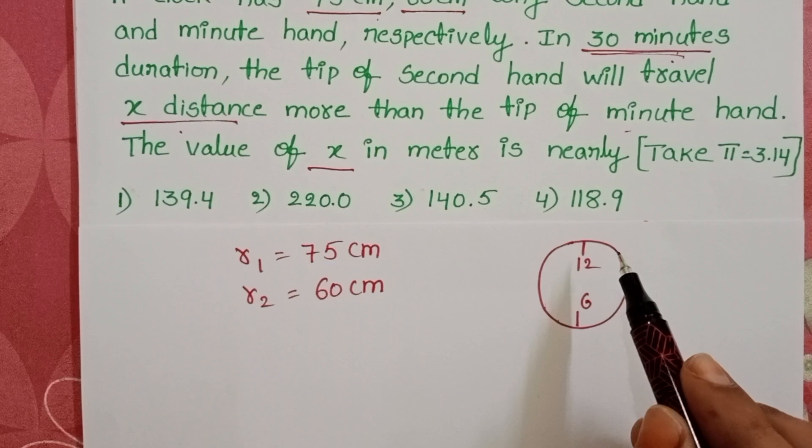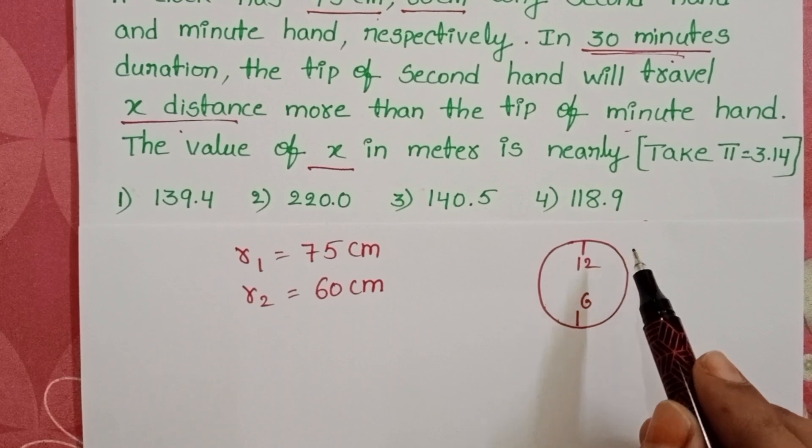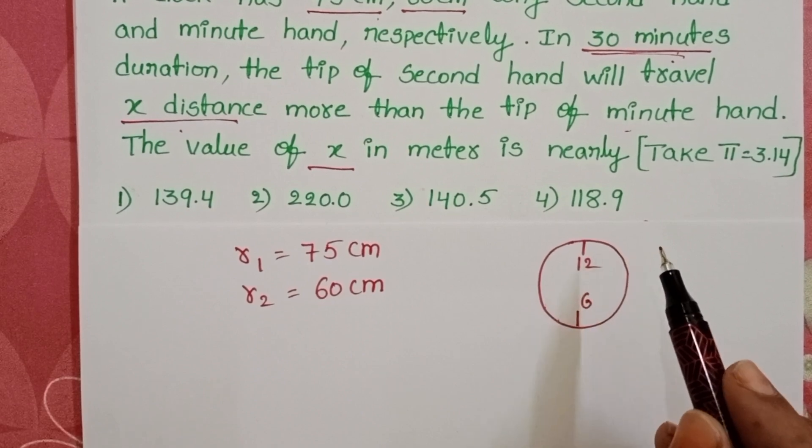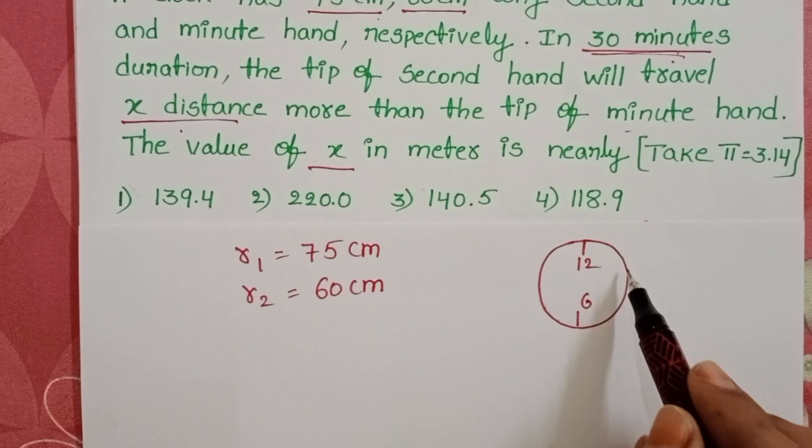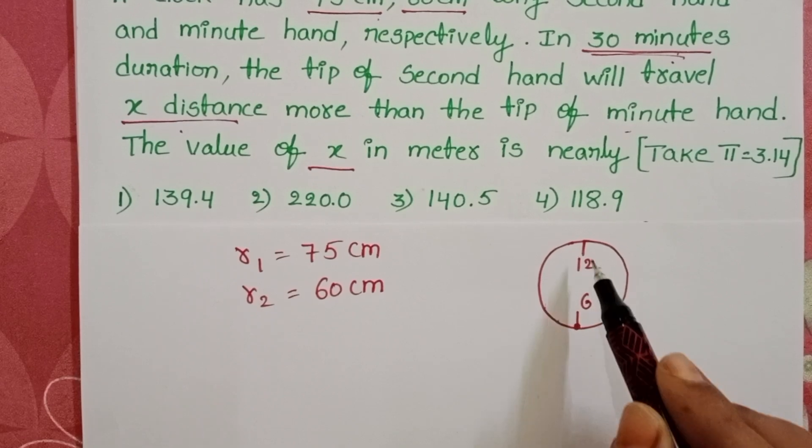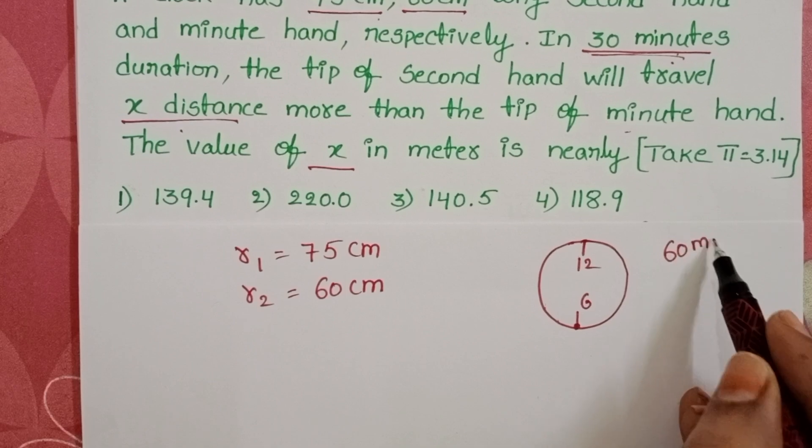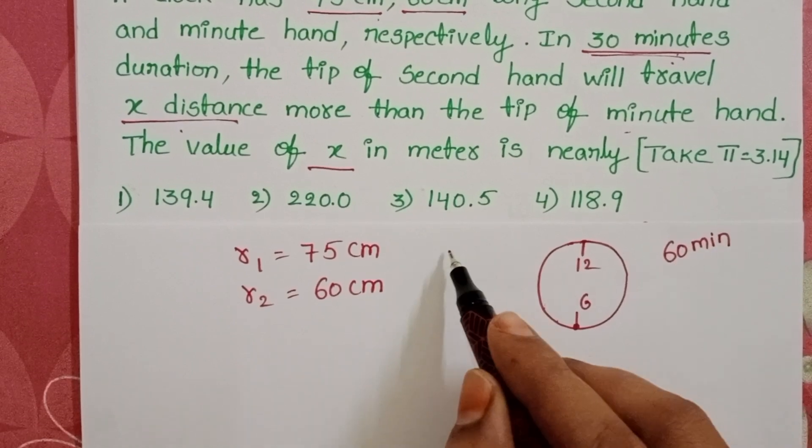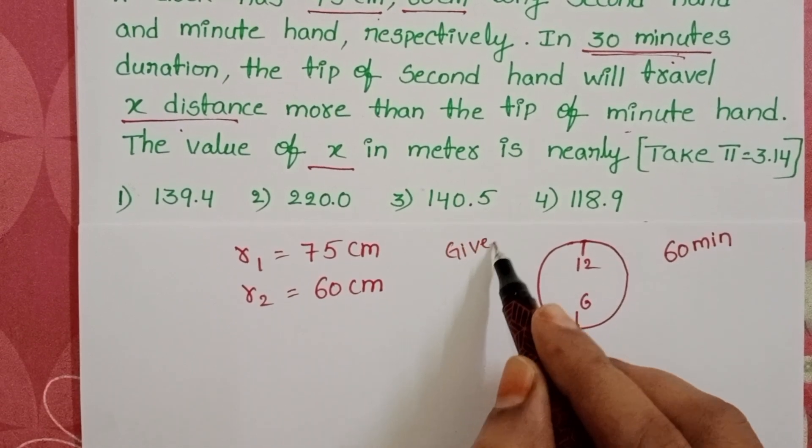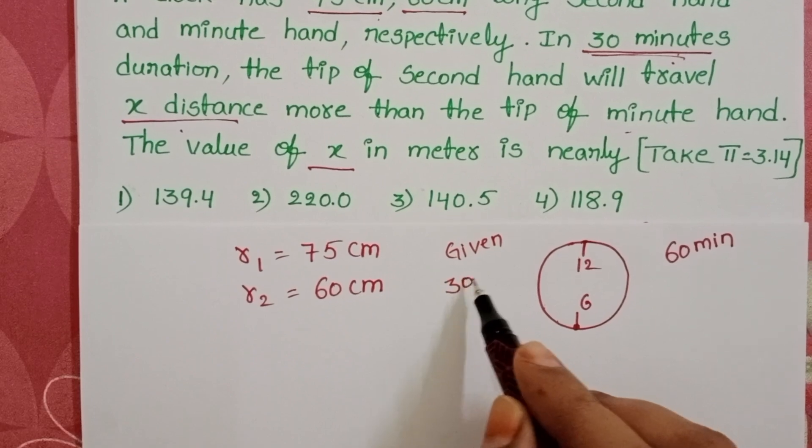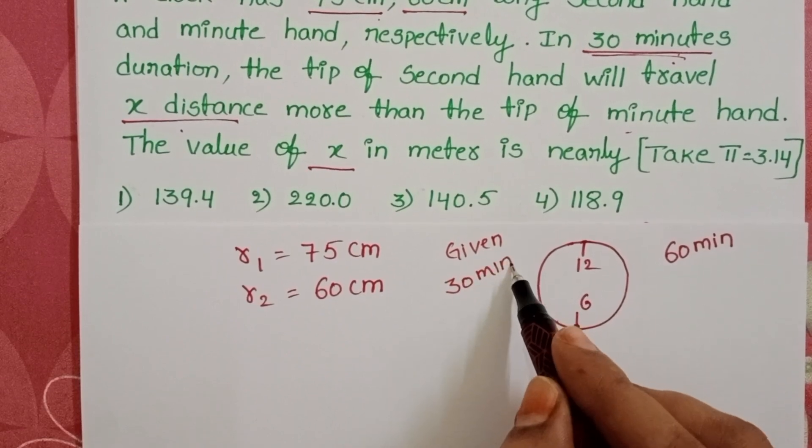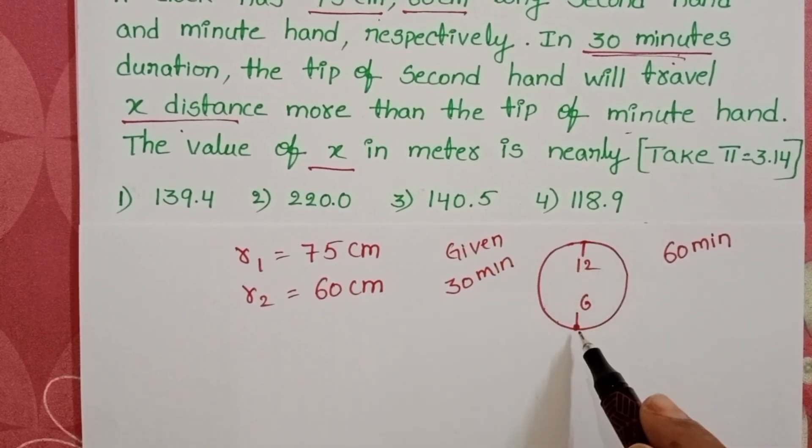We know within the 30 minutes time, the distance travelled by the minute hand is only half of the revolution. For one revolution, it takes 60 minutes time, but the given time is only 30 minutes. So within the 30 minutes time, the distance travelled by the minute hand is only half of the revolution.